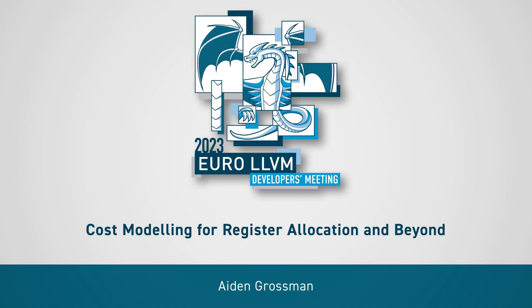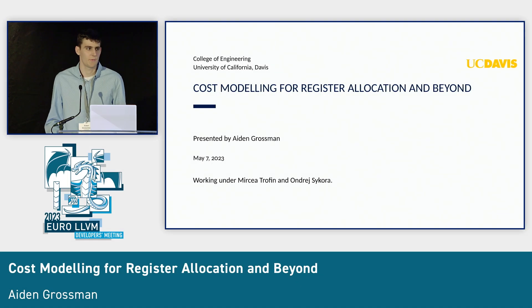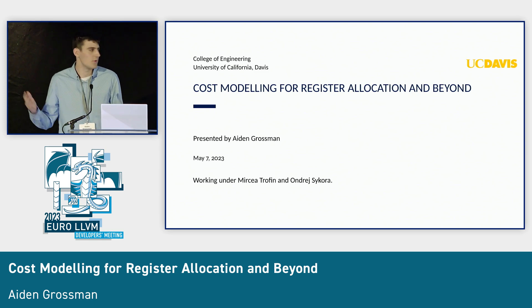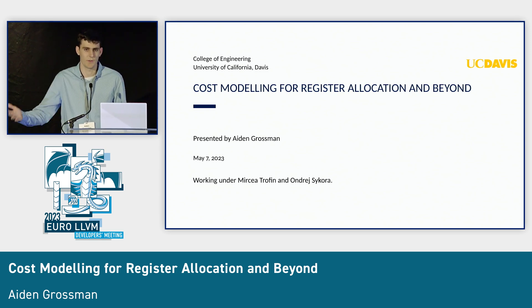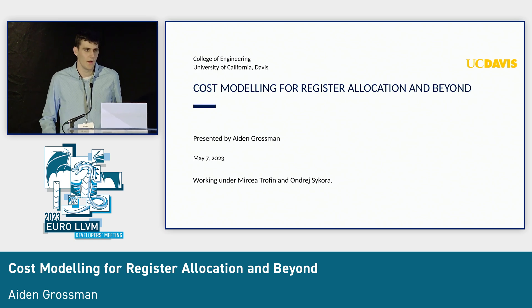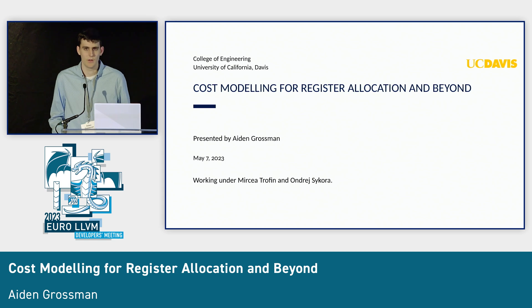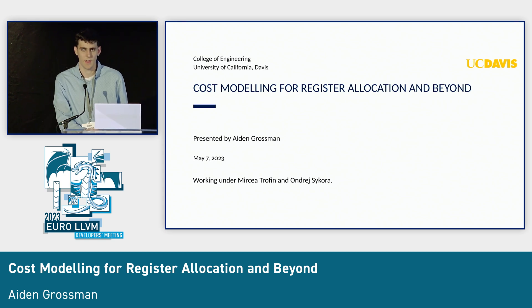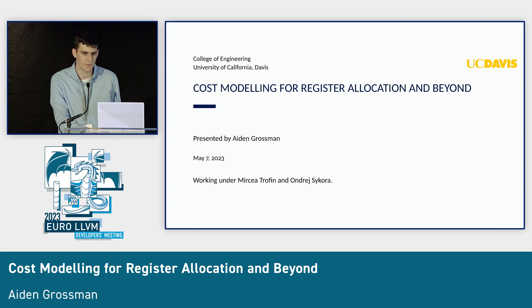My name is Aiden Grossman. I'm currently an undergraduate student at UC Davis, and today I'm going to be presenting on register allocation cost modeling, primarily for training machine learning models, and then also some of the future work and current work that I'm doing to improve this — not just for register allocation, but also beyond that for other problems. I'm currently working with two engineers at Google: Mircea Trofin and Andres Aikora.